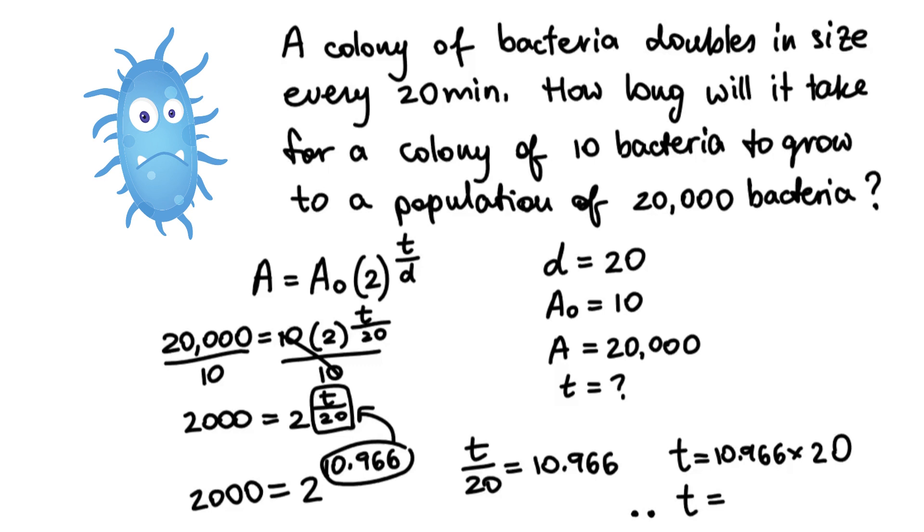Therefore, t equals 219.32 minutes. Let's convert that into hours and minutes. It will take approximately 3 hours and 40 minutes for the colony to grow from 10 bacteria to 20,000 bacteria.